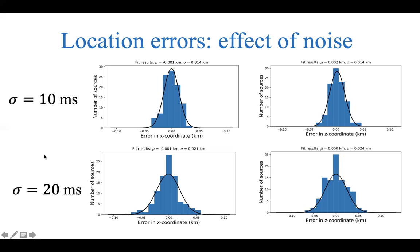When we increase the noise standard deviation by a factor of two to 20 milliseconds, we observe a flatter Gaussian curve in both cases. However, the peak error does not increase as significantly — the largest error is about 50 to 60 meters for both x and z coordinates. The standard deviation of error does not increase by a factor of two as the noise was increased; there is some increment, but it is less than proportional.